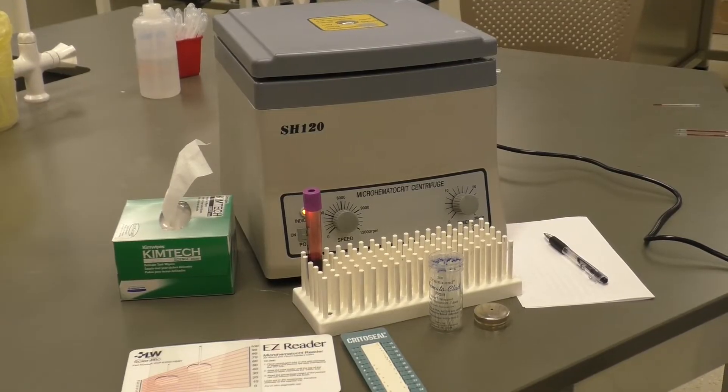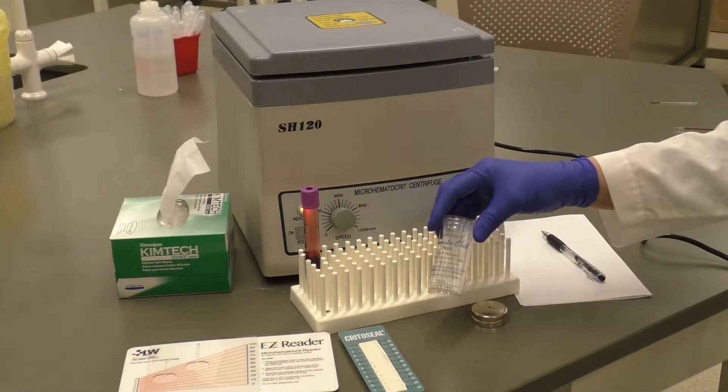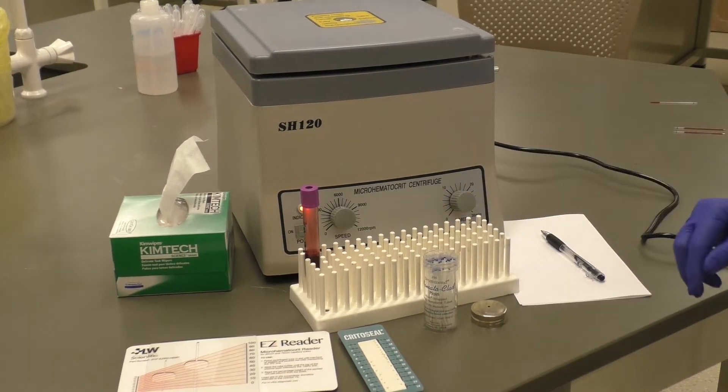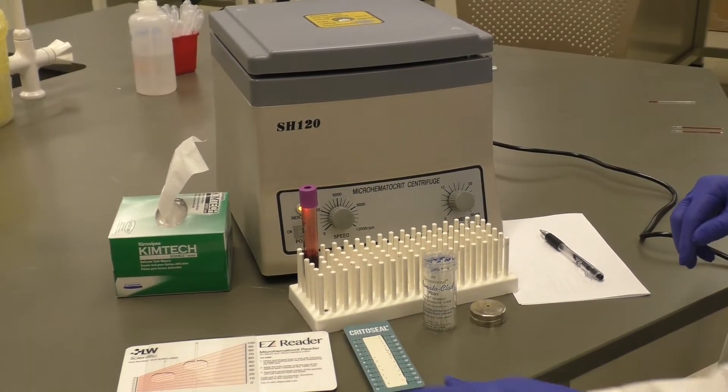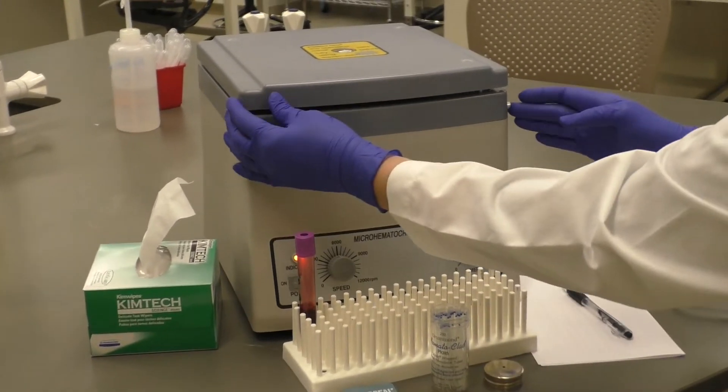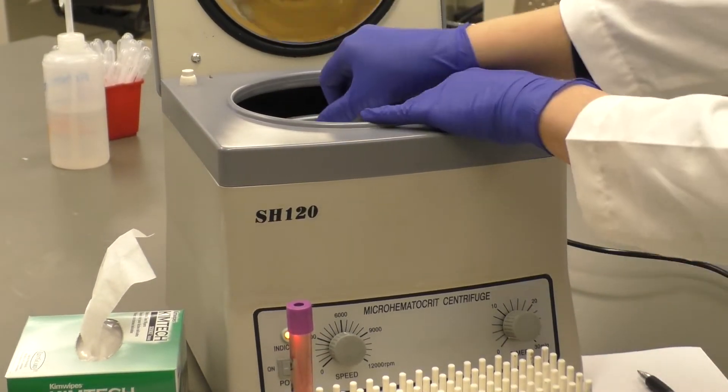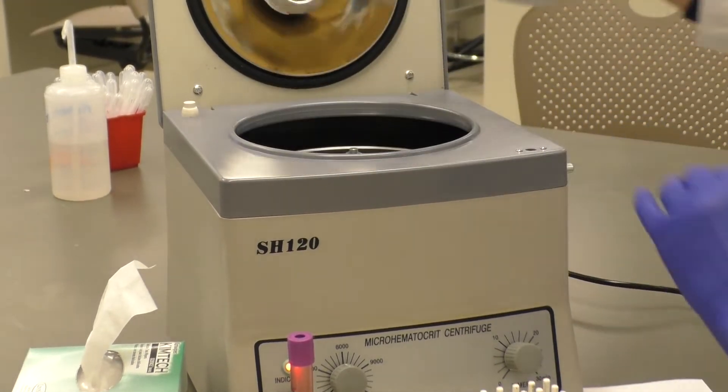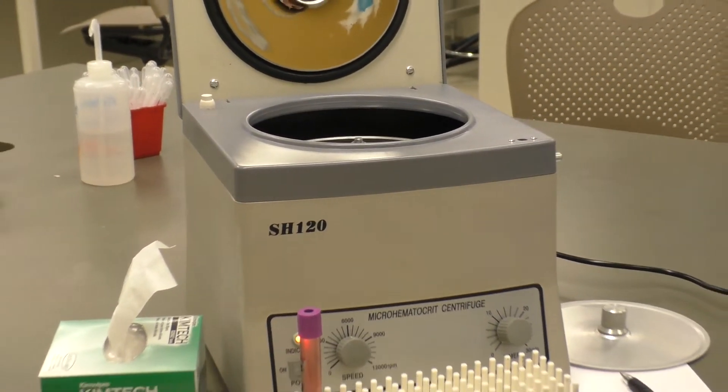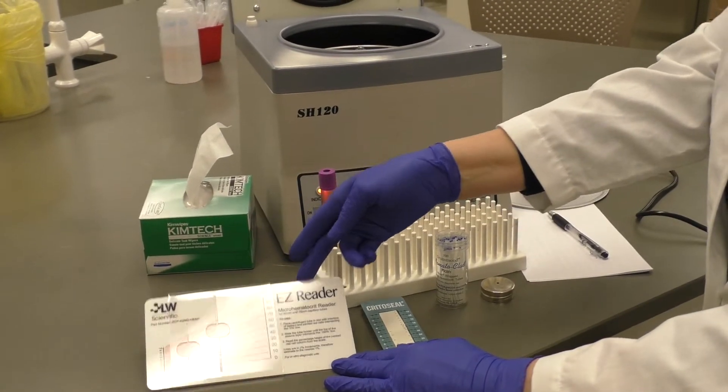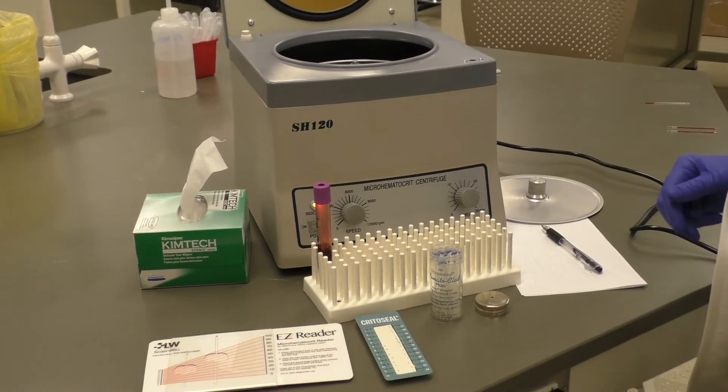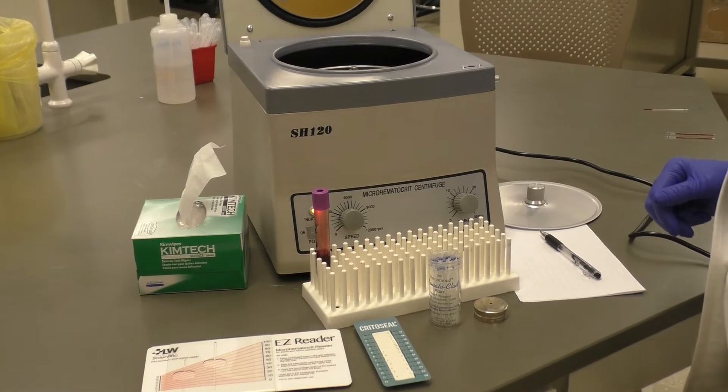To perform this procedure, you will need capillary tubes, a clay-type tube sealant, a micro-hematocrit centrifuge, and a micro-hematocrit reader. You'll also need kim wipes or gauze, and a paper and pen to make notes.